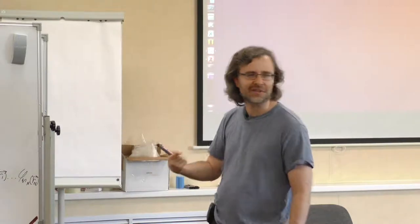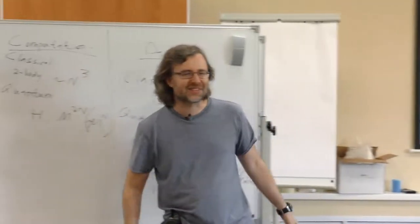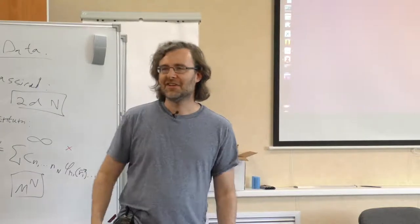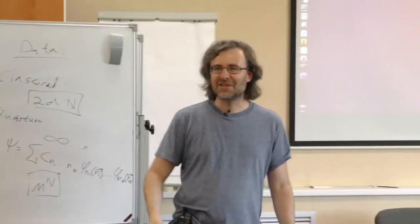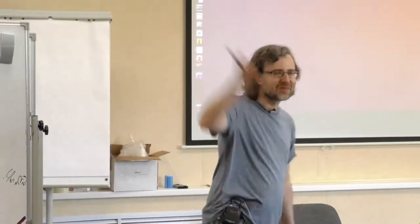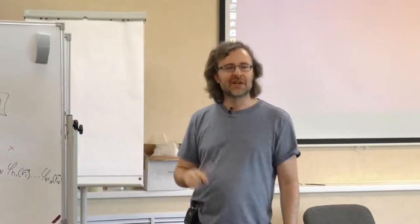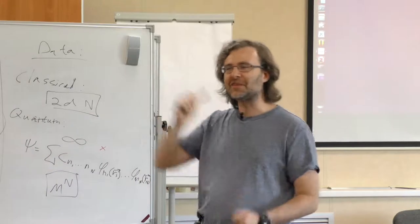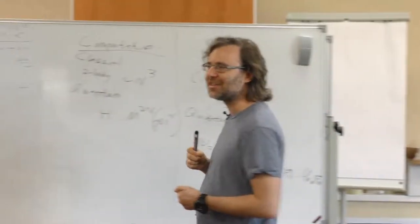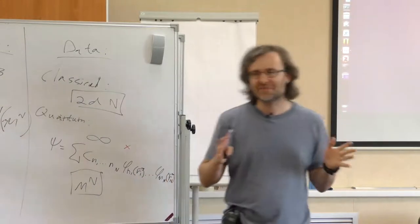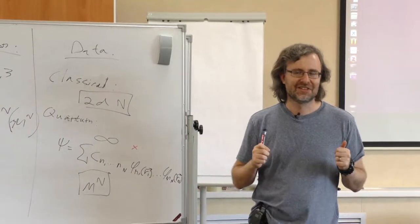We have Moore's Law for classical computers: every year and a half, for the same cost, you get twice the performance. For supercomputers it seems to still be alive. If we innocently extrapolate — the way economists assume exponential growth forever — that means every year and a half we can add one spin. So if the state of the art now is 60 spins, three years from now it'll be 62 spins. Just using standard engineering we can add one spin per year — a linear rate of growth of our ability to simulate quantum systems.